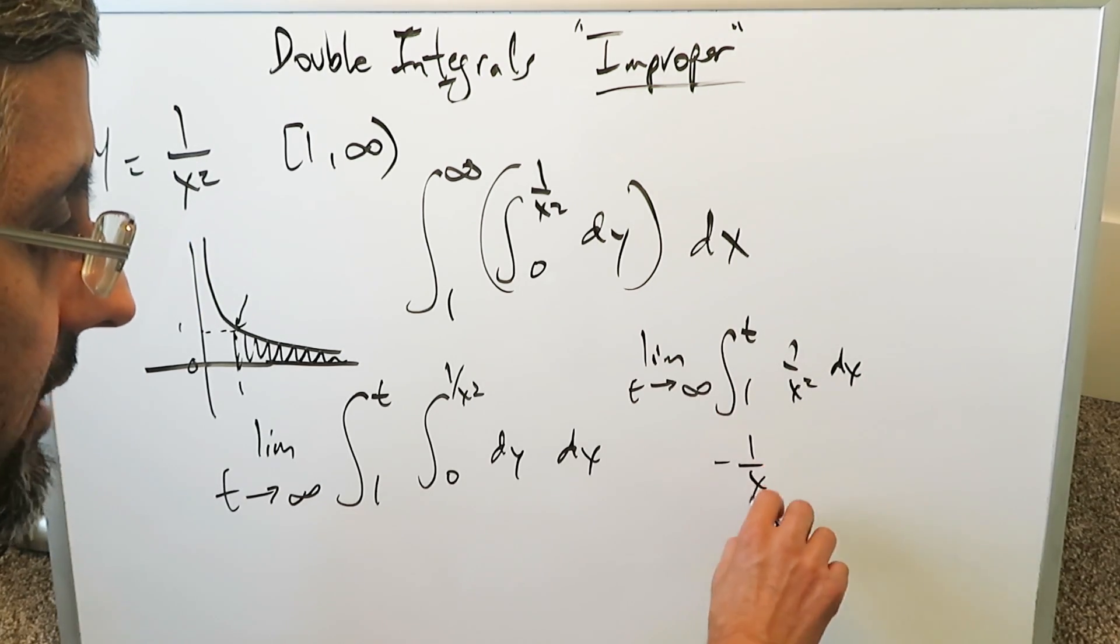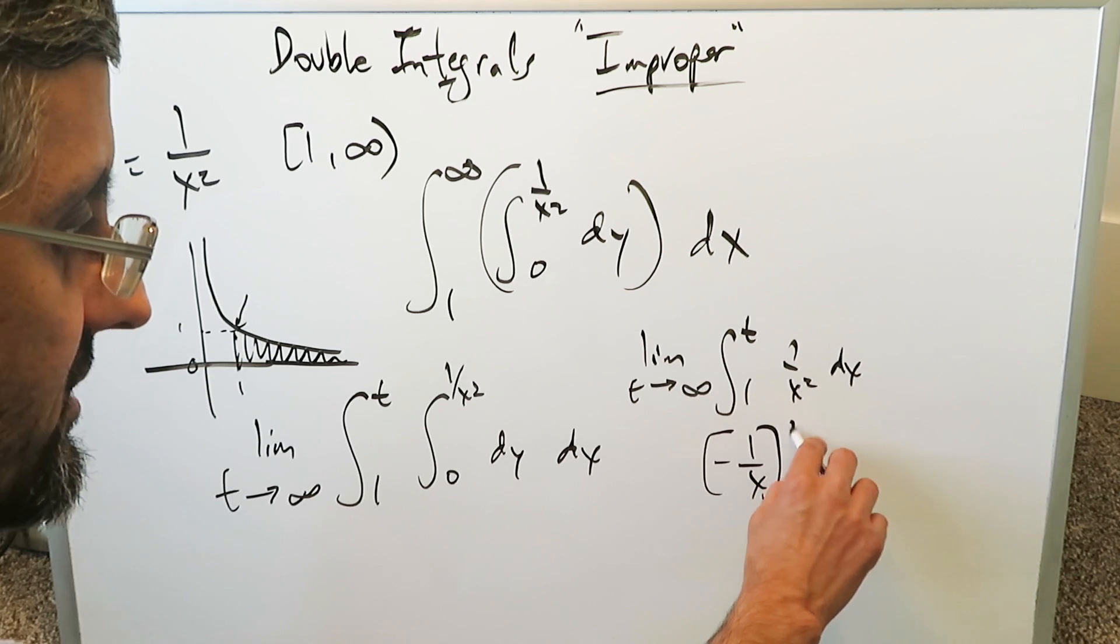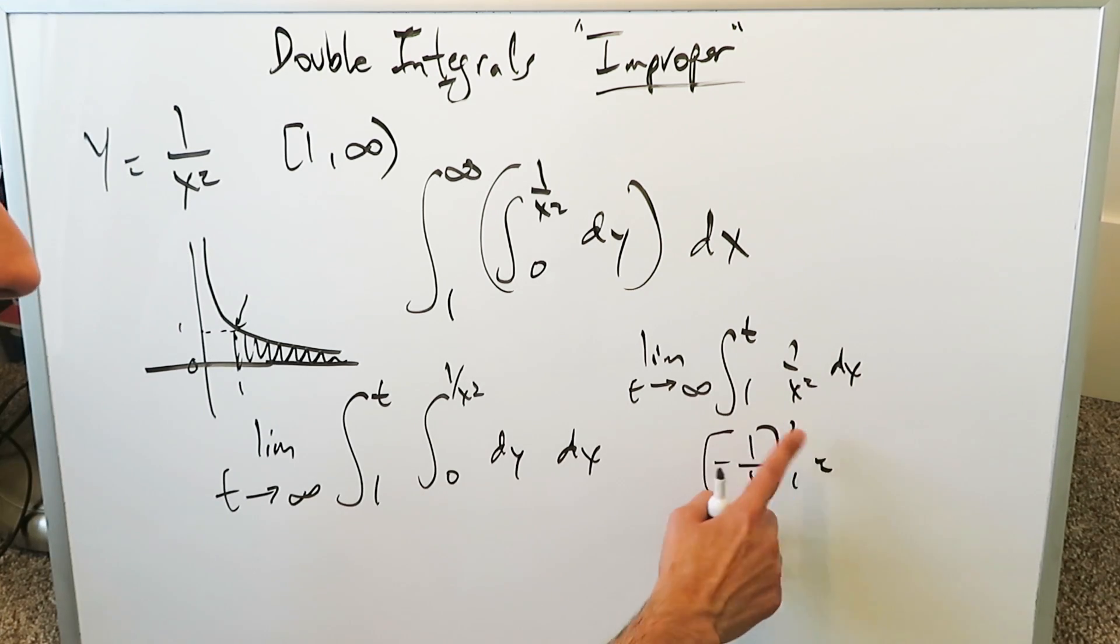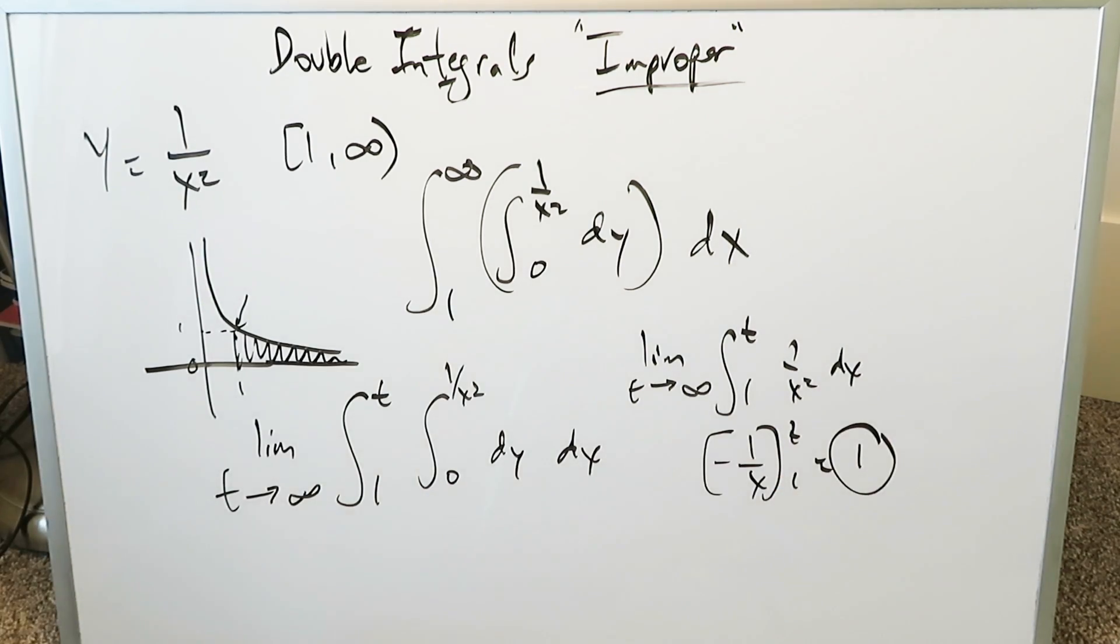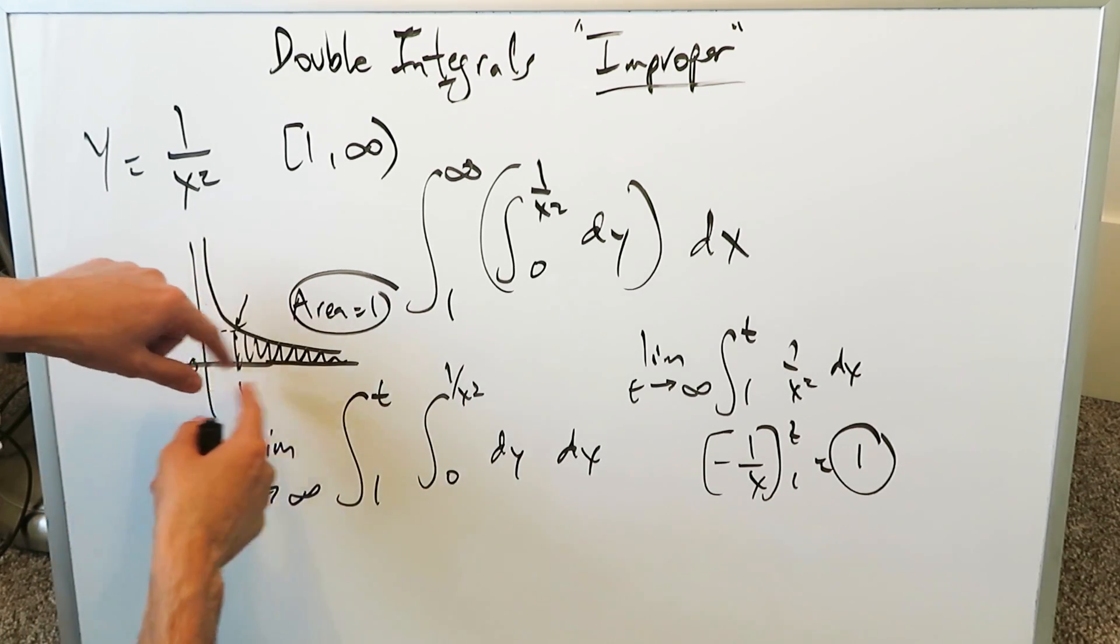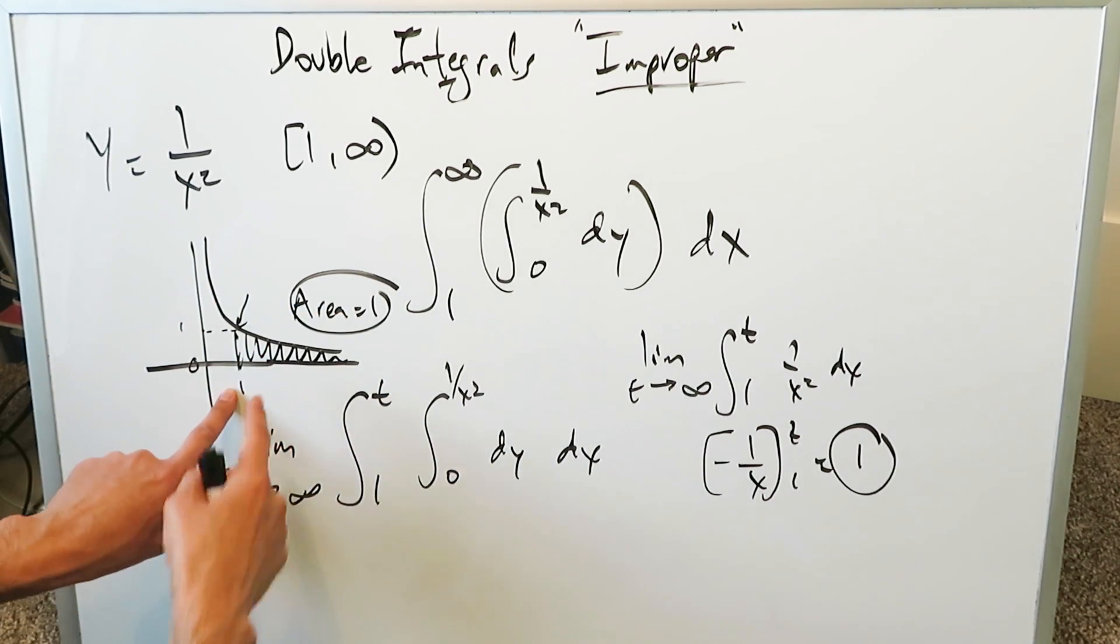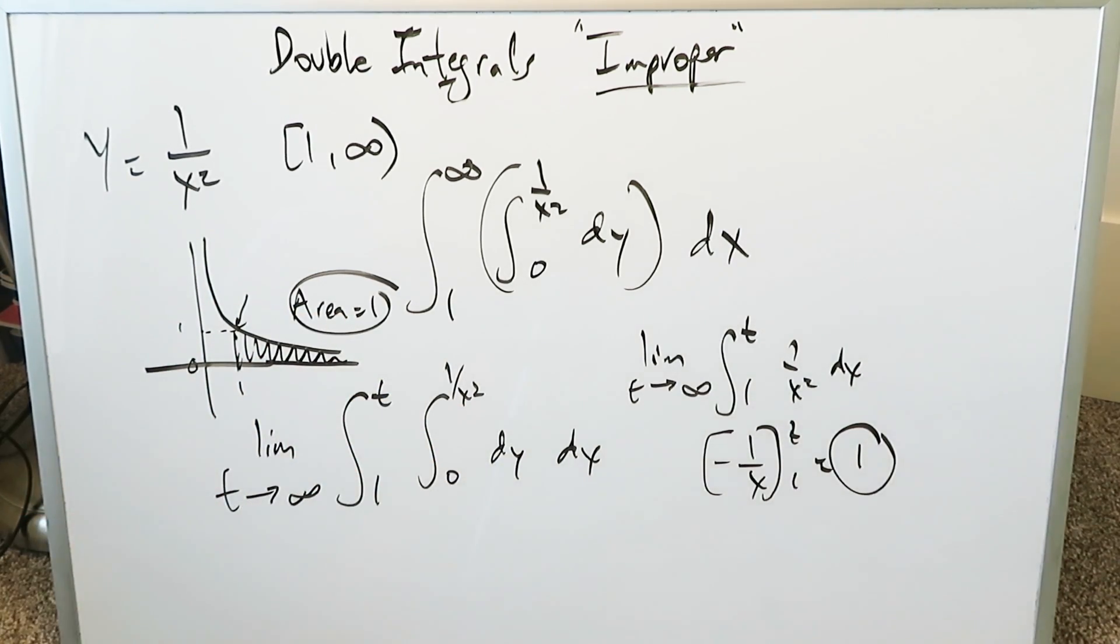Antiderivative here is minus 1 over x, evaluated from 1 to t. You can compute this: the t, the infinity coming in here will zero out, you'll have a minus minus 1 which is a positive 1. That would be the area of all of this shaded region, equal to 1. We've done it by means of double integral procedure and the outcome is good.